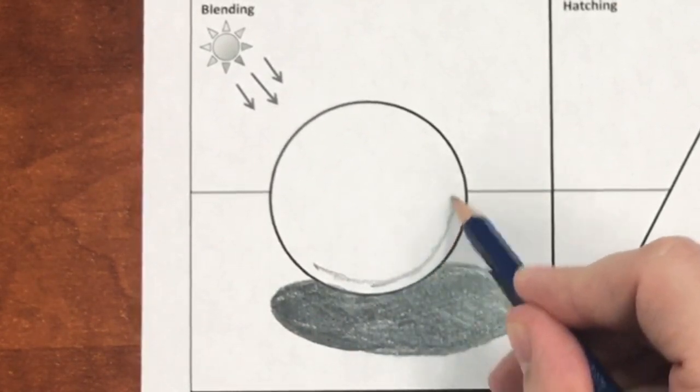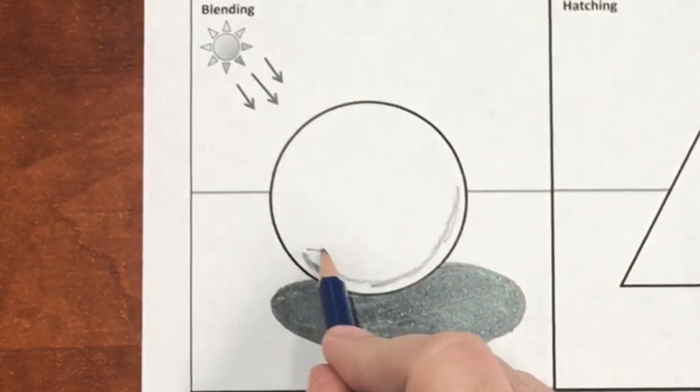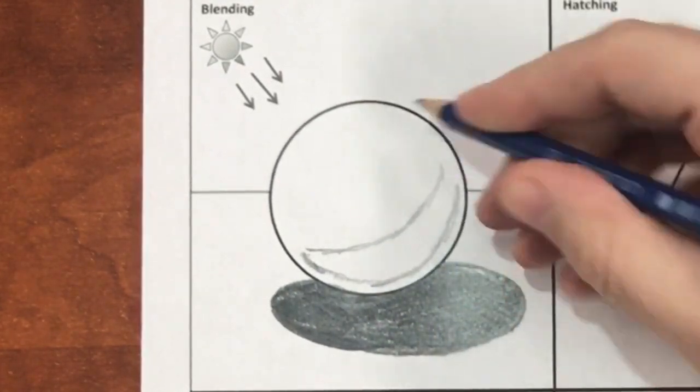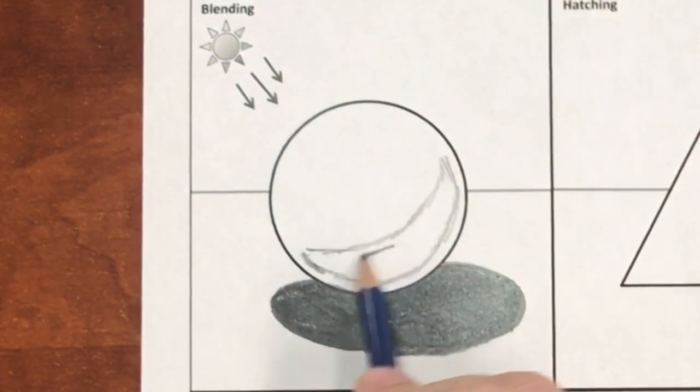In between the cast shadow and the core shadow, we're going to leave a little bit of space for what we call reflected light. This is light that's reflecting off of the surface that the object is sitting on.